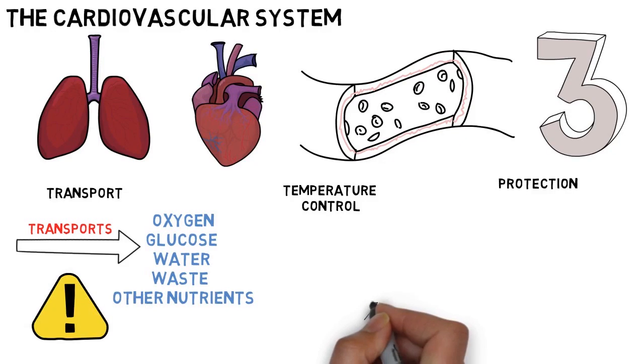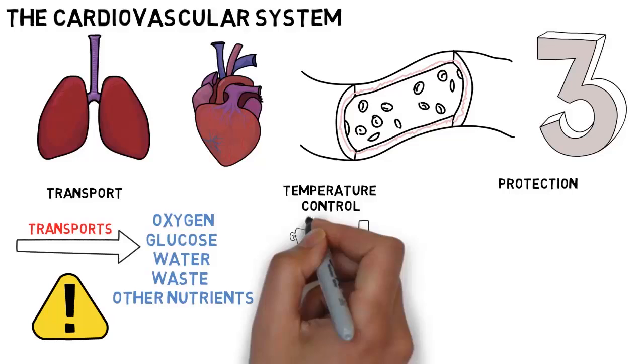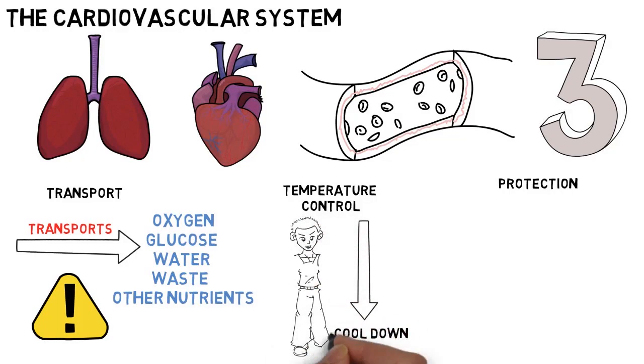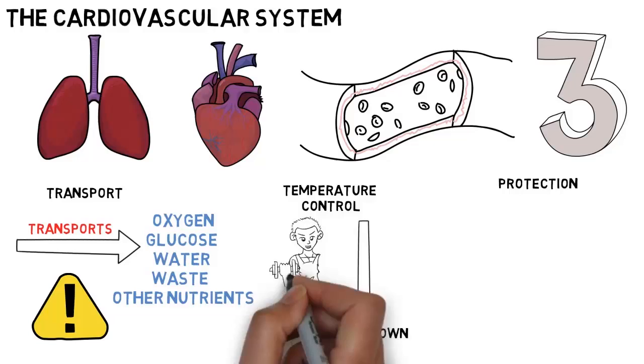Temperature control. When your body needs to cool down, for example after a heavy workout, the body will move more blood towards the surface of the skin which, due to its constant temperature, assists the body in cooling down.